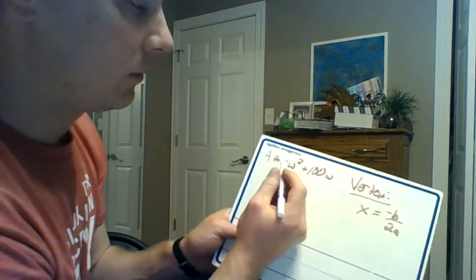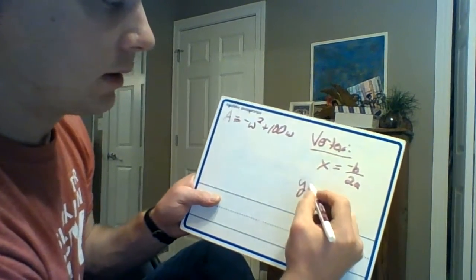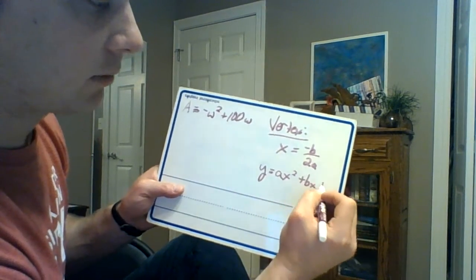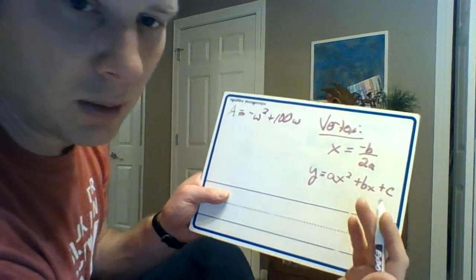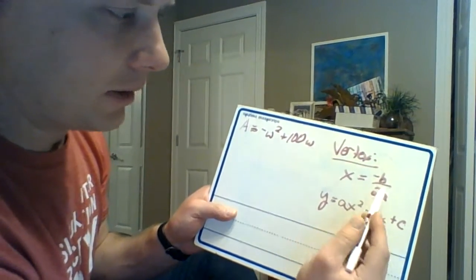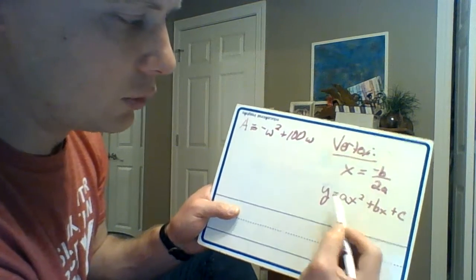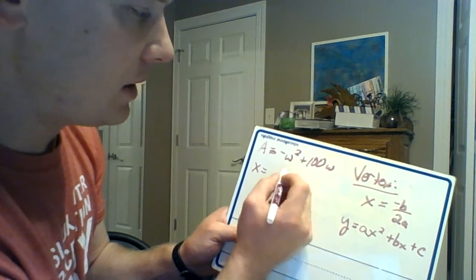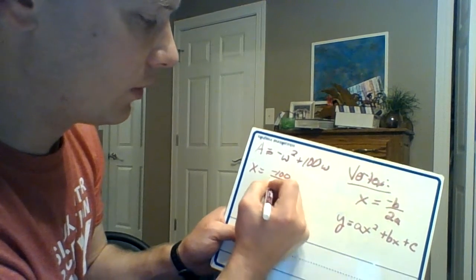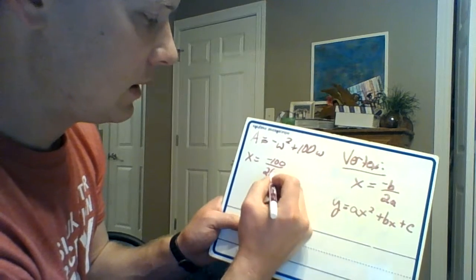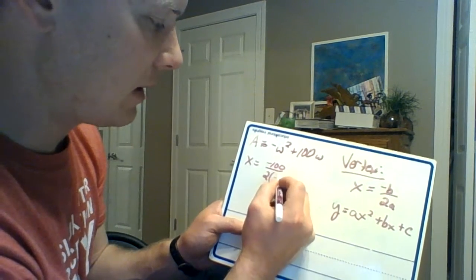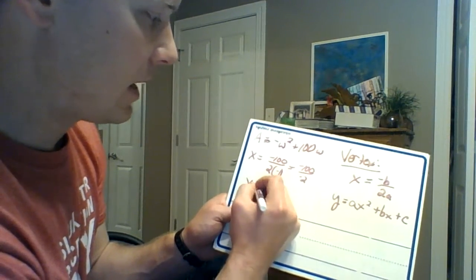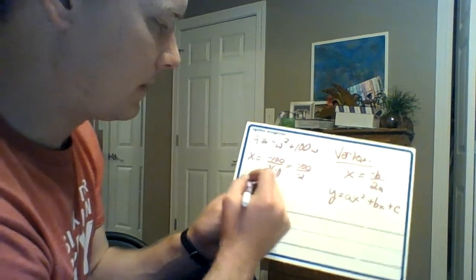In a general quadratic function, it's ax squared plus bx plus c. If you take negative b over 2a, those are the coefficients. So in this case, that x value is going to be negative 100 over 2 times negative 1, which gives you negative 100 over negative 2, which is x equals 50.